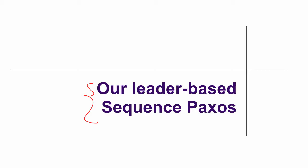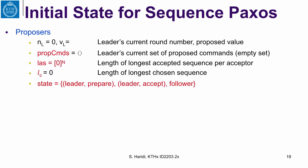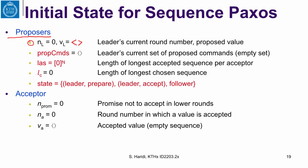We are now in a position to describe the first version of our leader-based sequence Paxos. Let us look at the initial state. We have a set of proposers. A proposer will have a current number and the current sequence, initially empty, and a current set of proposed commands coming from clients. A proposer's state can be a leader in a prepare phase, a leader in an accept phase, or a follower.